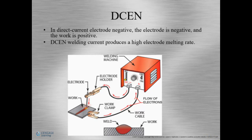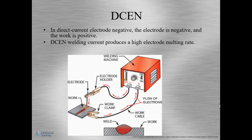Direct current electrode negative: direct current tells us that the current can only move in one direction. DCEN also tells us that the electrode is going to be negative. So the cable to the electrode holder will be plugged into the negative slot. Once the circuit has been completed, the flow of electrons goes towards the workpiece — towards our metal.